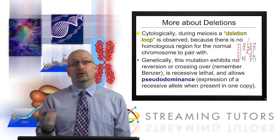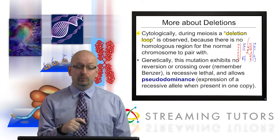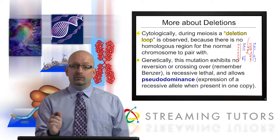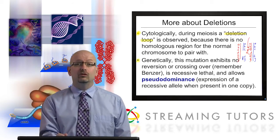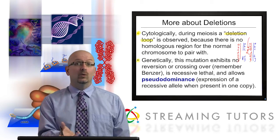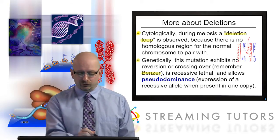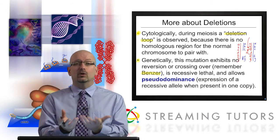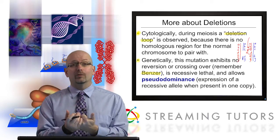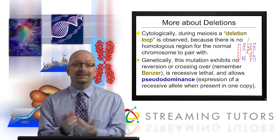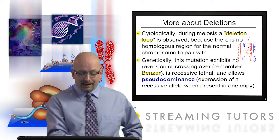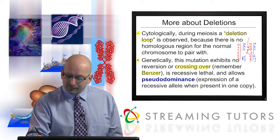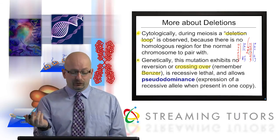From a genetic point of view — and we already mentioned this in the Benzer section — a deletion mutation, whether it's a little one or a big one, never has any reversion. Certain mutations, if you leave them alone long enough, you'll see reversion mutants that go back to the normal phenotype. But when something's deleted, there's nothing there — it can't revert. And you can't have any crossing over in the deleted region, because D and E have nothing to cross over with — it's gone.